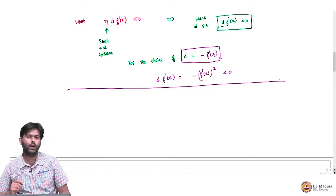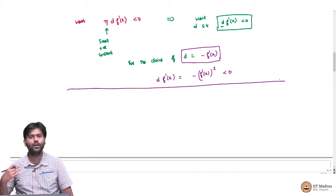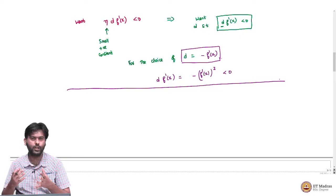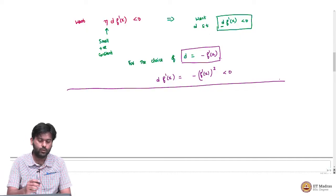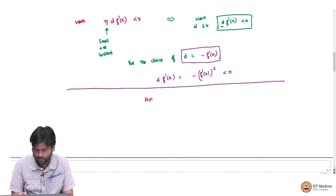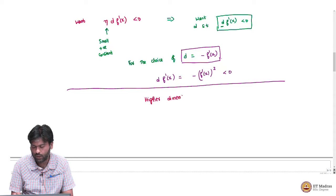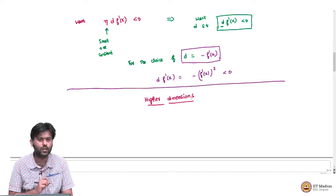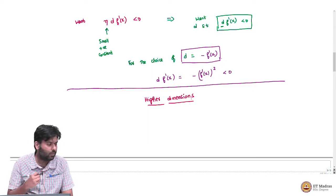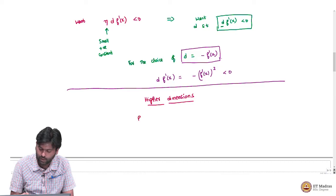What we are going to look at is generalizing the idea of moving in the negative derivative direction to functions of multiple variables. So we want to now look at higher dimensions. By higher dimensions, I mean that the function is not a function of a single variable, but a function of multiple variables.